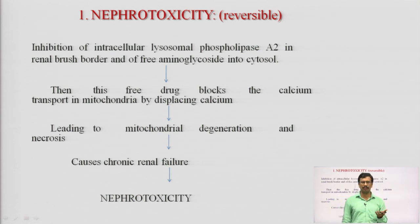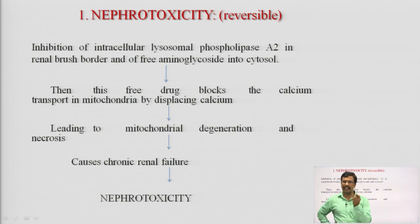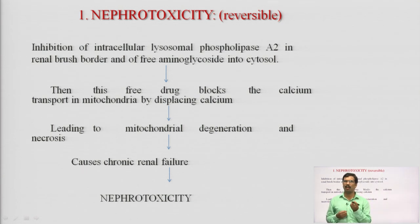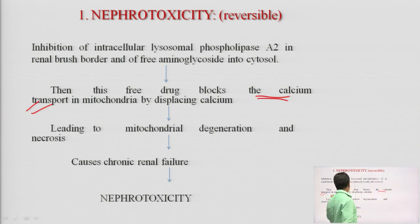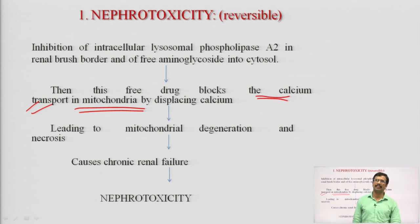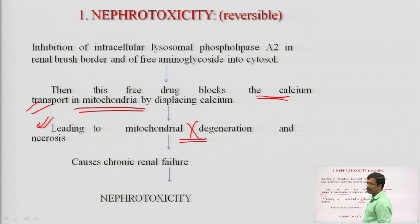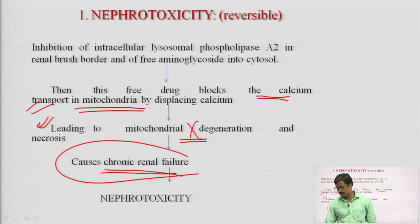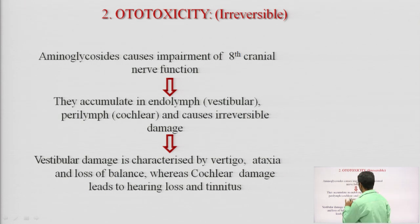The mechanism of nephrotoxicity: high NH2 groups combined with inhibition of the intracellular lysosomal enzyme phospholipase A2 — the free excess aminoglycoside blocks calcium transport in mitochondria, causing mitochondrial degeneration and necrosis. When mitochondria don't function properly, ATP is not produced, leading to chronic renal failure.